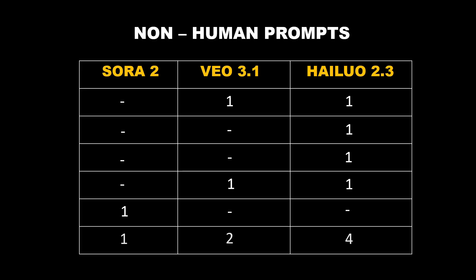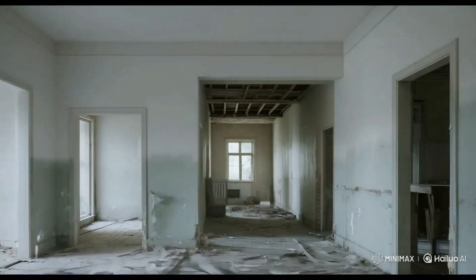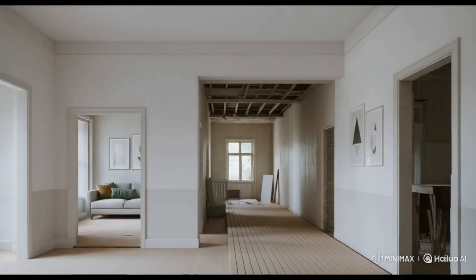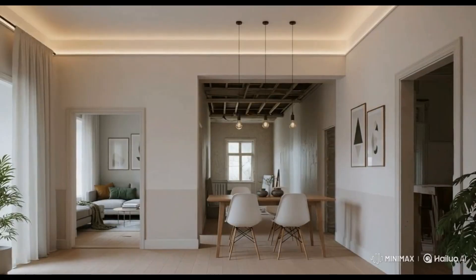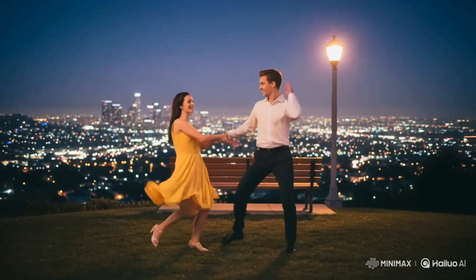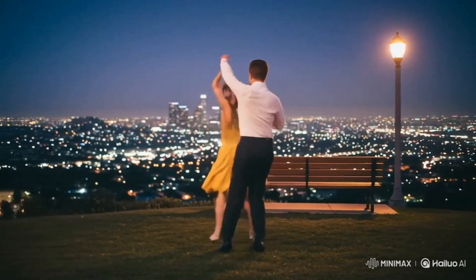So far we've been testing only non-human prompts, and here's how the scoreboard looks: HiLaw 2.3 is leading with four points, VO 3.1 sits at two, and Sora 2 has one point. So if you're creating videos without humans, HiLaw definitely delivers the most stunning visuals and motion. But if you need built-in audio support, VO 3.1 is still your best bet. Now let's take it up a notch and test how all three handle human-based prompts, because that's where realism really gets tested.